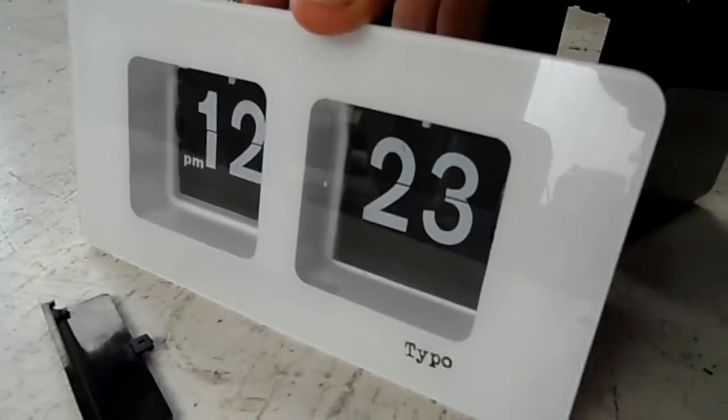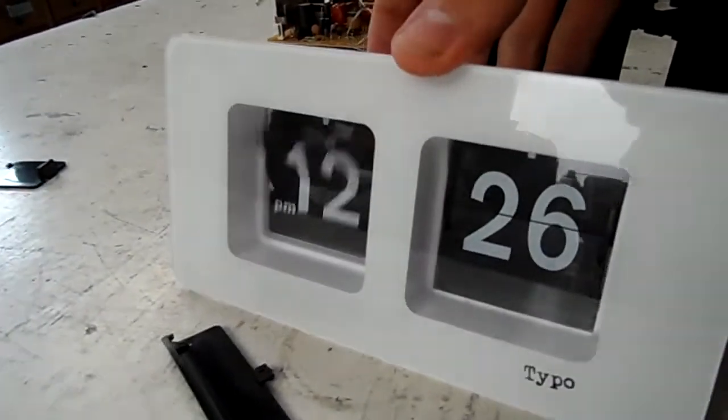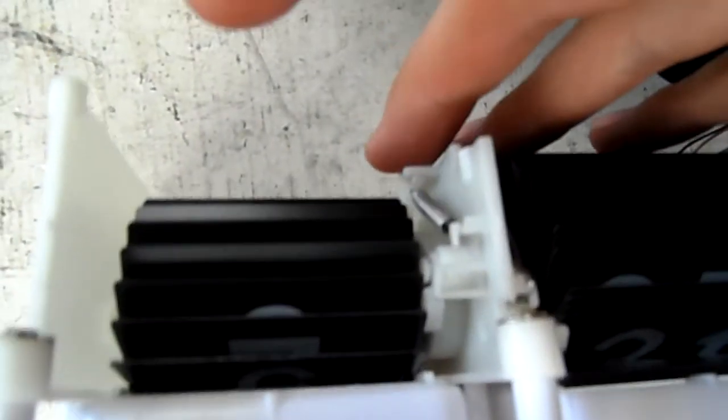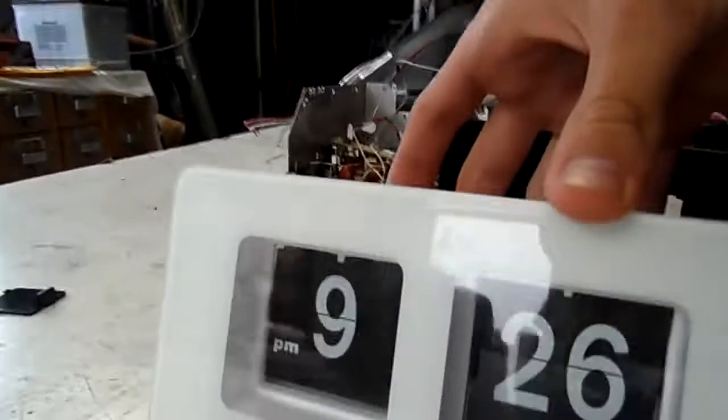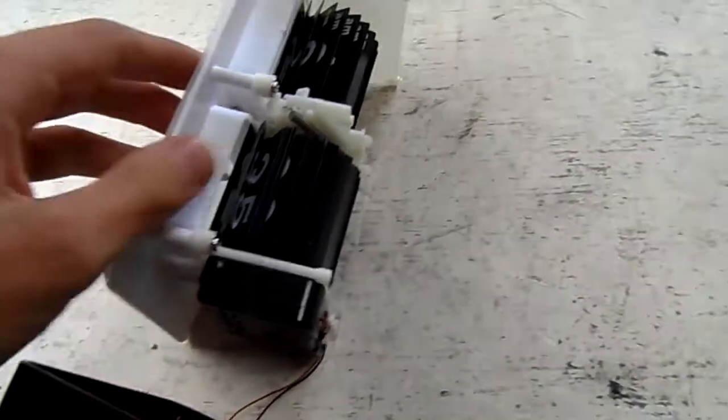It's got two little levers at the back where you can actually set the time manually. And so every time I push it, it's letting go this lever and letting the drum move by one flap at a time. It's a very simple form of like a digital clock but without using a vacuum fluorescent display or an LCD panel.